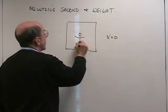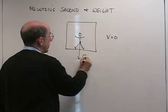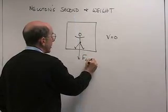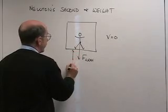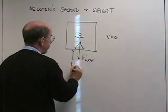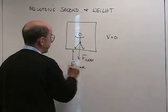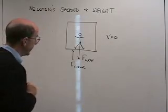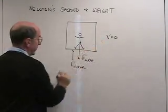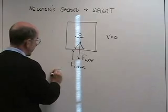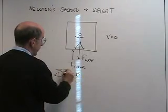You've got the force of gravity pulling down on you. If you're not moving, you've got the force of the floor pushing up. Since you are at a constant velocity of zero, the net force must be equal to zero.